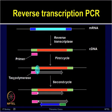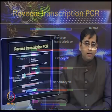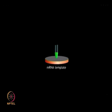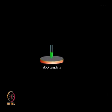Reverse transcription PCR, or RT-PCR, is a variation of regular PCR that is used to generate multiple copies of DNA starting from a molecule of RNA. The technique first requires the template RNA strand to be reverse transcribed into corresponding cDNA, which is then amplified using traditional PCR to generate multiple copies.